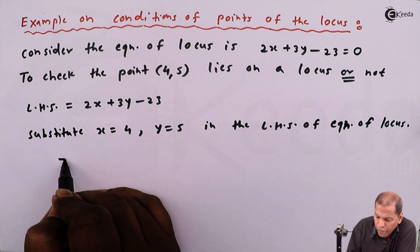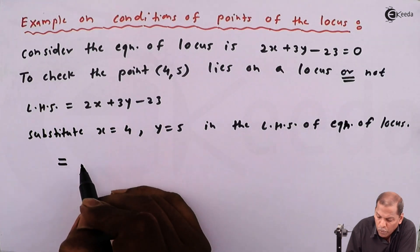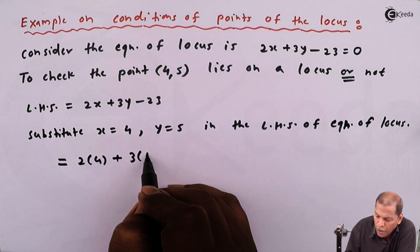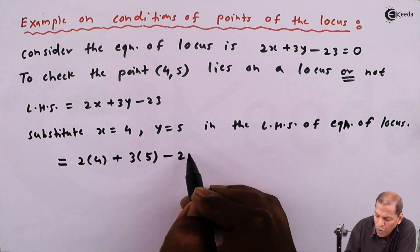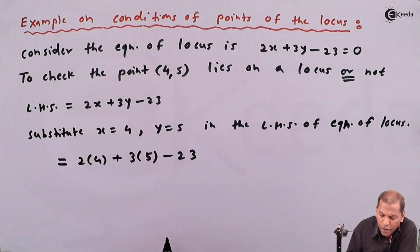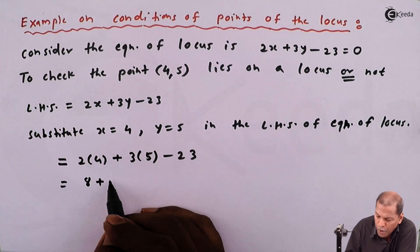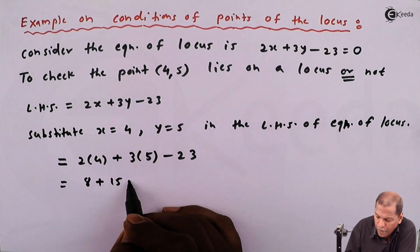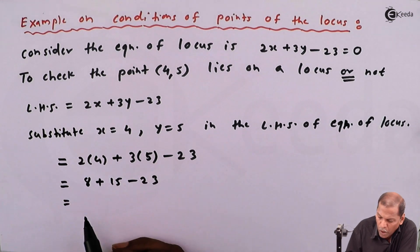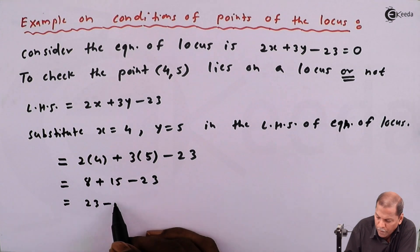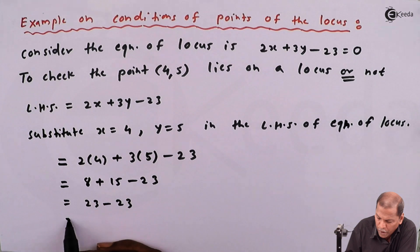The next step will be equals 2 times 4 plus 3 times 5 minus 23. 2 times 4 is 8 plus 3 times 5 is 15 minus 23. 8 plus 15 gives us 23 and then minus 23.